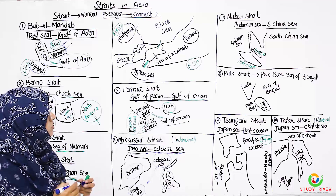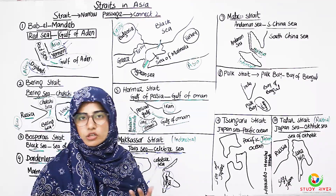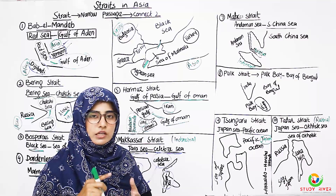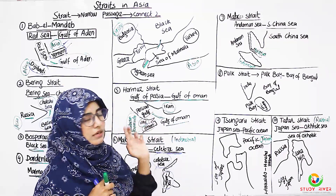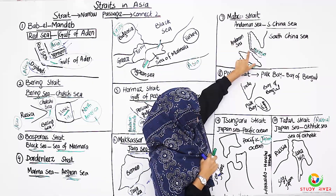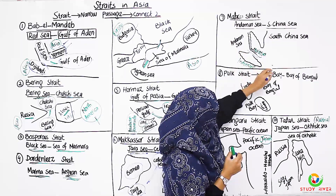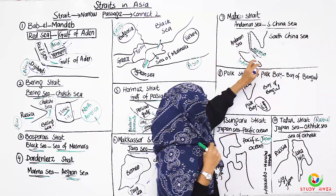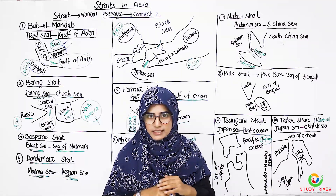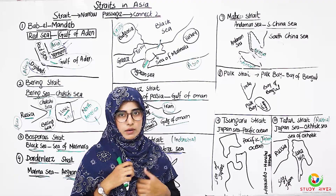Next is the Strait of Malacca, which is the longest strait. Many paper questions are asked about its two countries — those are Malaysia and Indonesia. The two water bodies it connects are the Andaman Sea on one side and the South China Sea on the other. If asked which two water bodies, you say Andaman Sea and South China Sea.